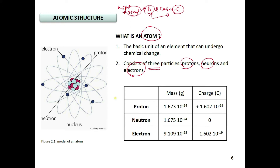Here is one example of a model for an atom. In the middle of the atom, we have a nucleus. Inside the nucleus, we have both protons as well as neutrons. Surrounding the nucleus, we have electrons.